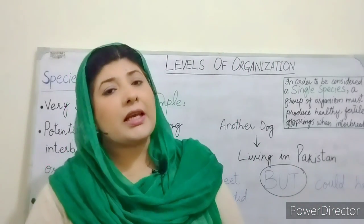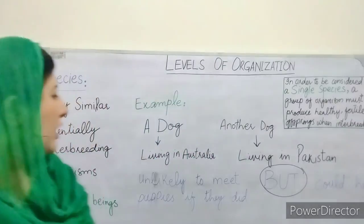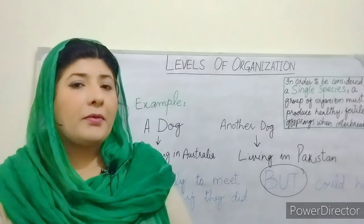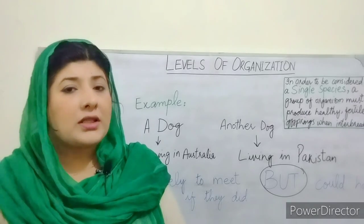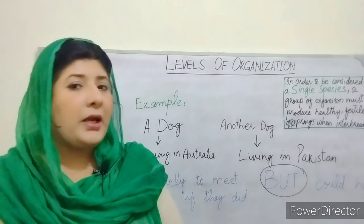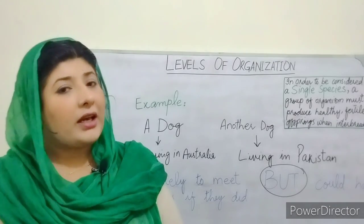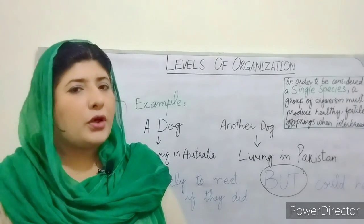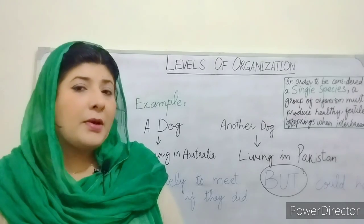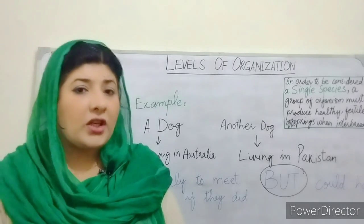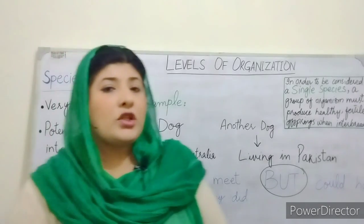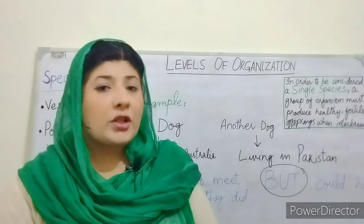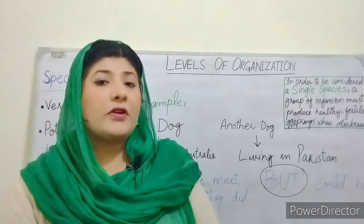For example, take a dog which lives in Australia and another dog which lives in Pakistan. Originally, Australia and Pakistan are very far apart and they are unlikely to meet. But if they could, they can have puppies together — they can interbreed and produce their offspring. That is why, in any part of the world, they are called dogs. In biology, organisms in a group that can produce offspring are called one species.